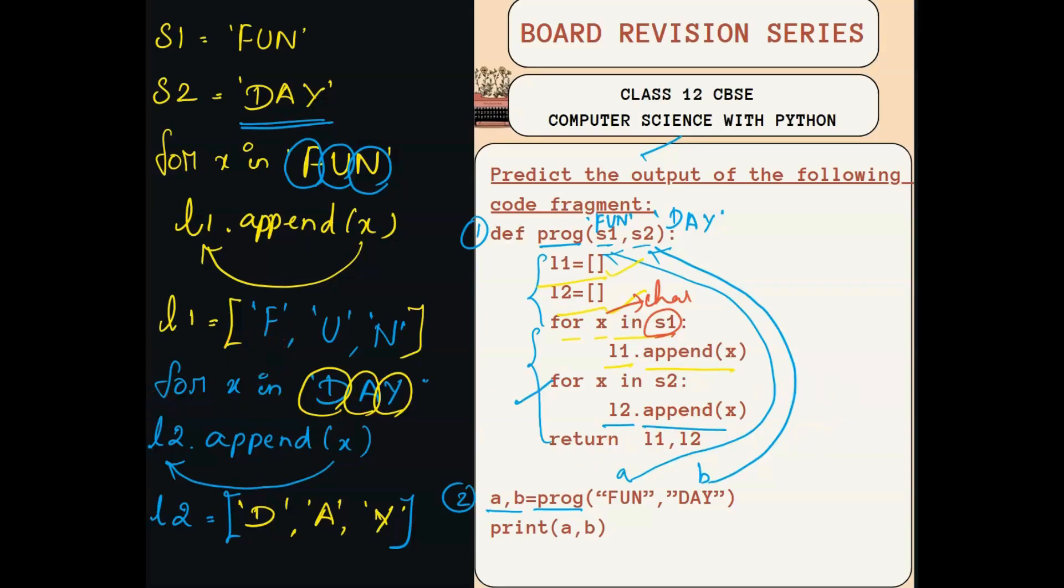So what is the next statement? The next statement which is given here is return l1, l2. So this return function will be returning this l1 and l2 to a, b. Now a becomes l1 and b becomes l2. So this l1 is getting passed on to a and l2 is passed on to b.